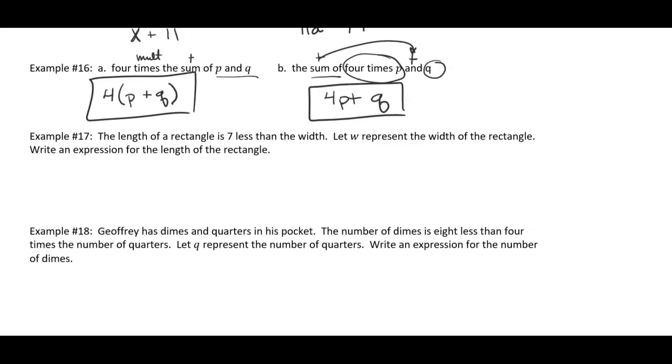Example 17. The length of a rectangle is seven less than the width. Let w represent the width of the rectangle. So they give us a variable here. w is going to be the width. And so I can put like a little w right above the word width. Write an expression for the length of the rectangle. Well, it says the length of the rectangle is seven less than the w. So less than, it's that less than. So it's going to be w - 7.